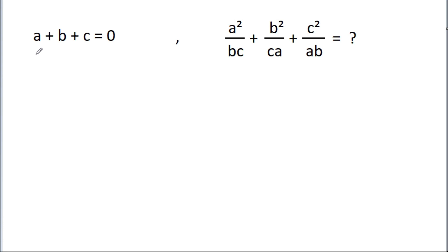In this video, we have given that A plus B plus C is equal to 0. Then we have to find the value of A squared by BC plus B squared by CA plus C squared by AB.